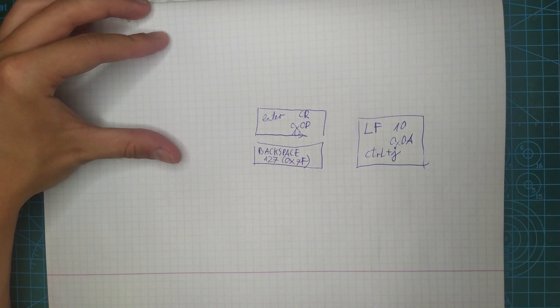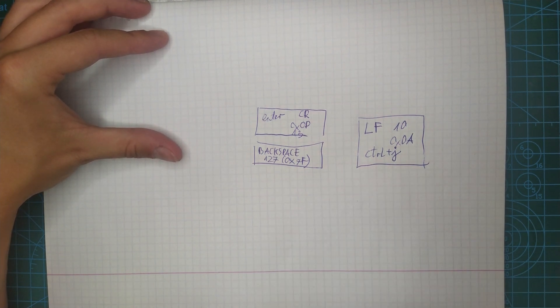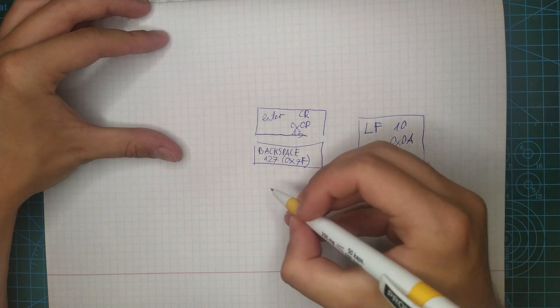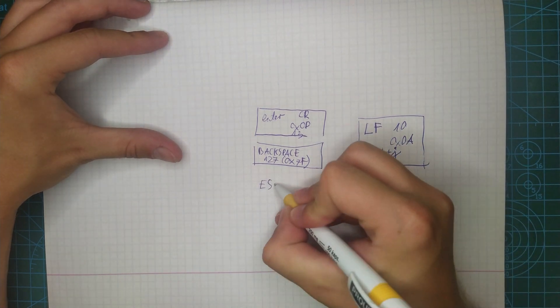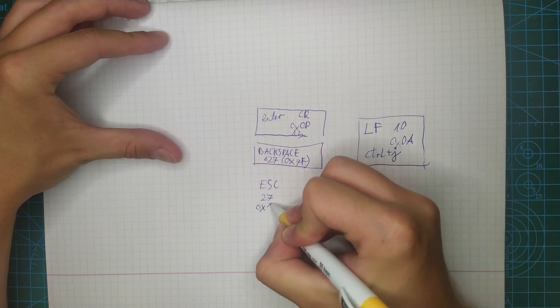And last, very popular and useful feature, is arrow keys. Each arrow key will send three characters: ESC, so 27, 0x1B.